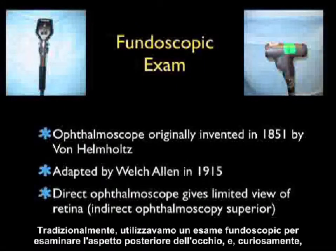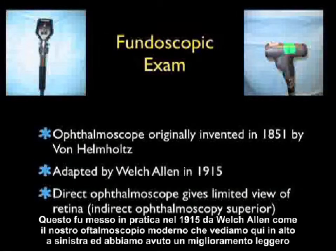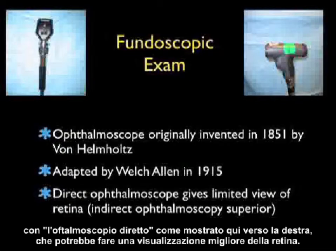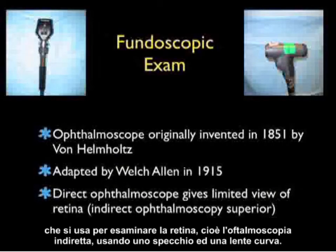Traditionally, we've used the fundoscopic exam to examine the posterior aspect of the eye. Interestingly, we're currently using technology — the ophthalmoscope — which was originally invented in 1851 by von Helmholtz in Germany. This was adapted in 1915 by Welch Allen into our modern ophthalmoscope. We've had a slight improvement with the fundoscopic gun, which may give a better view of the retina. However, it's well understood by ophthalmologists that direct ophthalmoscopy gives a limited view of the retina compared to indirect ophthalmoscopy using a mirror and curved lens.